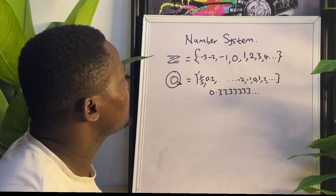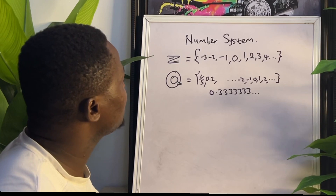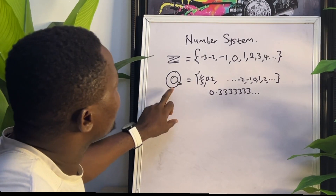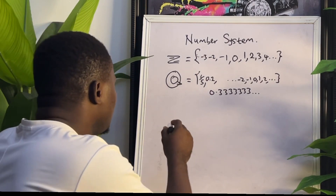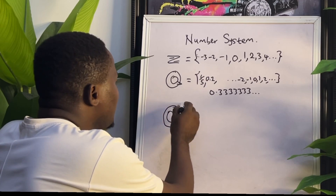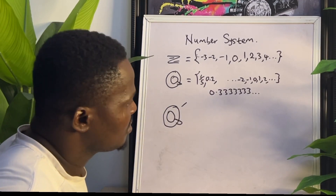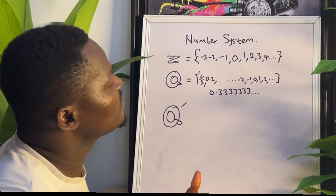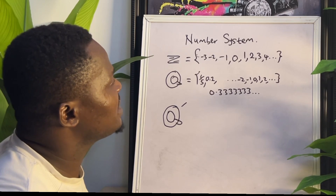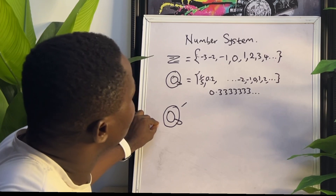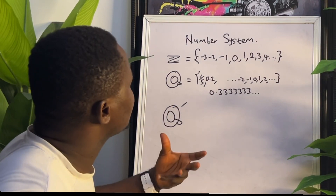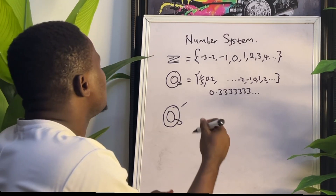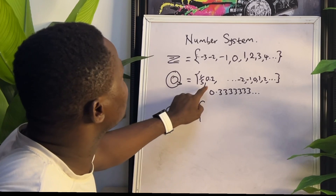Then there is another number system — one that does not contain the rational number system but is the opposite of it. It is symbolized as Q-prime, where the prime shows it is the opposite. They have nothing in common. Just as there is nothing in common between prime numbers, even numbers, and odd numbers — their intersection is zero — the intersection between rational and irrational is also zero. The elements of the irrational number system are the opposite of those in the rational number system.